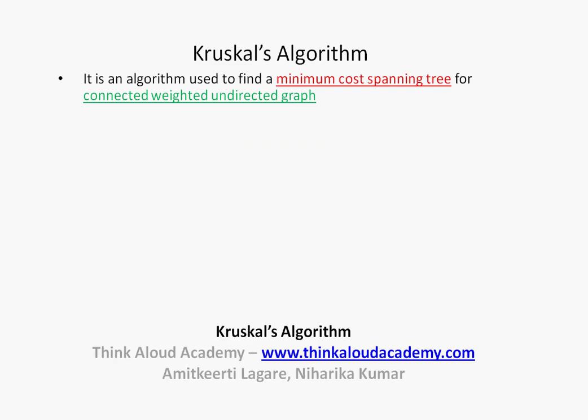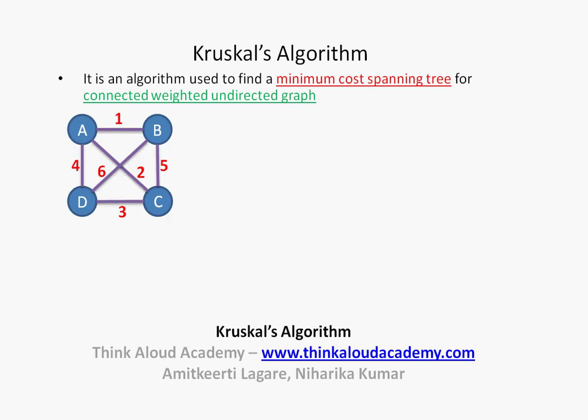Kruskal's algorithm is an algorithm used to find a minimum cost spanning tree for a connected, weighted, undirected graph. In this figure, you see that there are four vertices and they are all connected by edges. This graph is connected because all the vertices are connected using some edge or the other — there is no isolated vertex here. It is weighted because all the edges have some number on top of them, which could represent the distance between two vertices if those vertices represent cities. They are undirected because they do not have an arrow pointing towards any particular vertex.